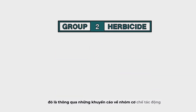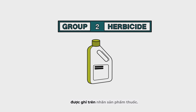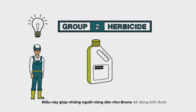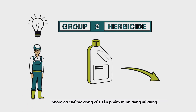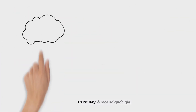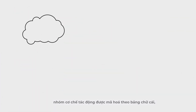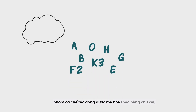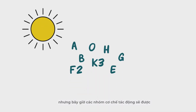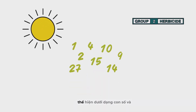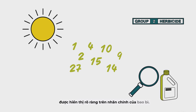One of the many ways Global A-TRAG helps is through the International Mode of Action Labelling System on herbicide bottles, which helps farmers like Bruno easily know their product's mode or modes of action. In the past, in some countries, the mode of action code system used letters of the alphabet, but now the mode of action code will be numbers and will be clearly visible on the front page of the herbicide's label.